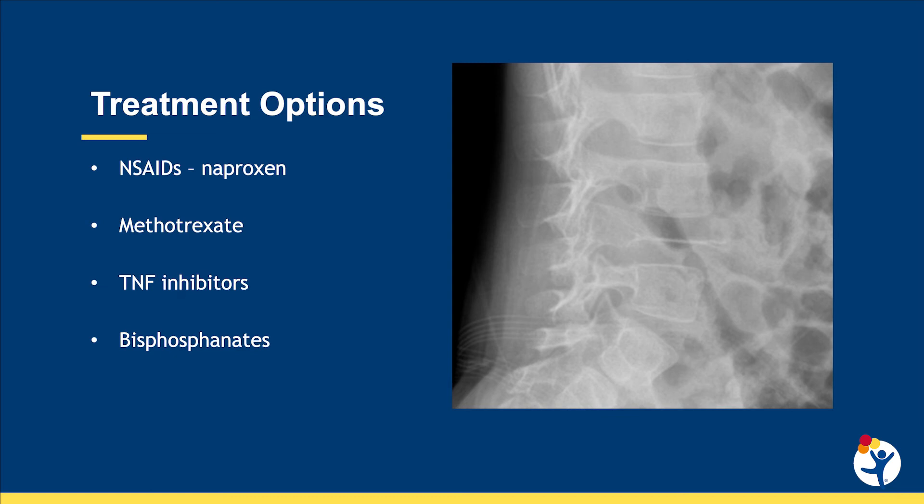If the naproxen doesn't work, we'll go on to treatments including methotrexate or TNF inhibitors. We also use bisphosphonates. The only time we really deviate from this treatment algorithm is when we see CRMO in the spine.